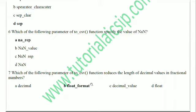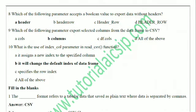Question 8: Which of the following parameters accepts a boolean value to export data without headers? If you want to export without headers, you use the `header` parameter, which accepts True, False, or None. 'Header_row' and 'HEADER_ROW' in capitals are not valid parameters. The correct answer is `header`.